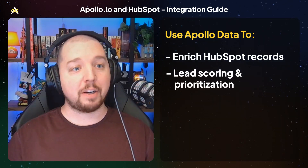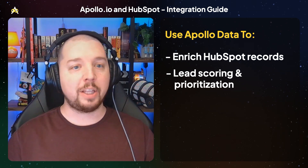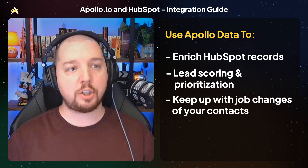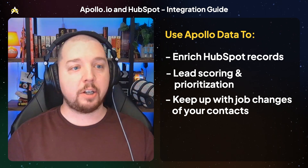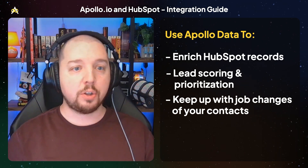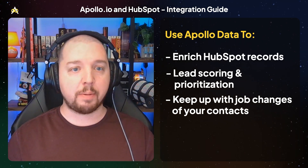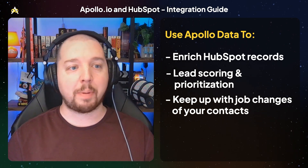A huge benefit of having up-to-date data in Apollo is it makes it really easy to keep up with job changes of your contacts. The average job tenure is less than four years at the same company, so it's no wonder that more than 20% of the emails in your contact list go bad every single year. Sending emails to bad email addresses hurts your metrics and also risks your email deliverability.